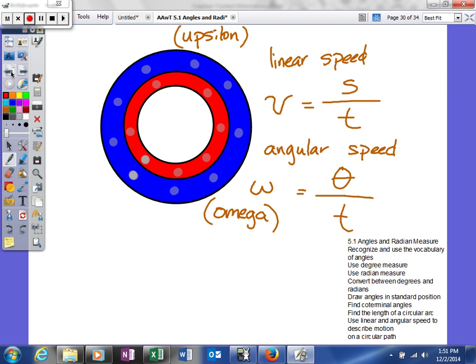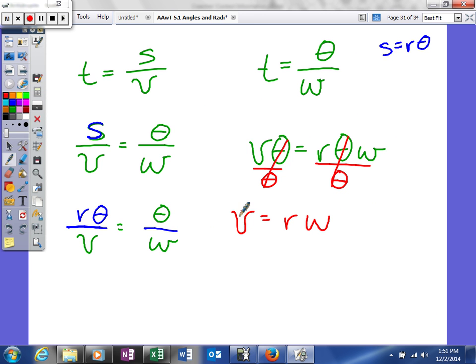So what we're going to get is we'll get this is equal to r of ω. And just a couple of reference again. That represents our linear speed. So our linear speed is equal to our radius times our angular speed. So that's what that stands for.